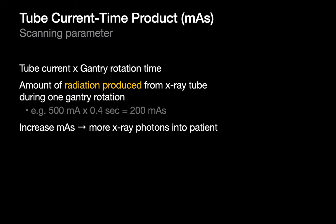X-ray tube current and gantry rotation time are often linked and referred to by their product, the tube current time product, or by its units MAS (milliamp seconds). MAS effectively quantifies the amount of radiation produced by the x-ray tube during one rotation of the gantry. Increase the MAS and you're effectively increasing the amount of x-ray photons you're shooting at your patient.